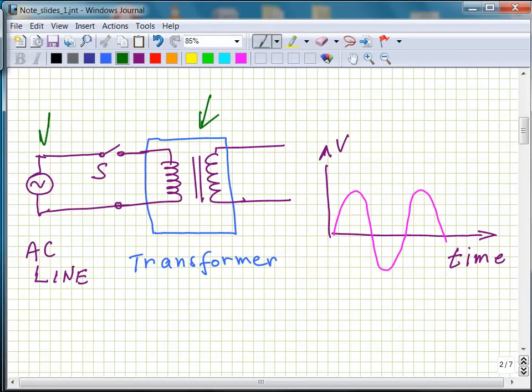The transformer, here's the power line. Now suppose you can choose. You can connect it at zero voltage. This is the time axis. This is the voltage of the line.